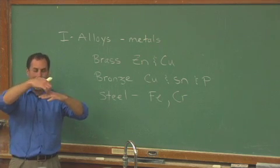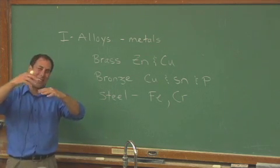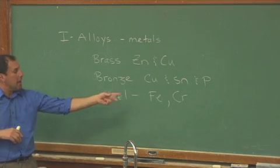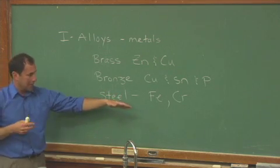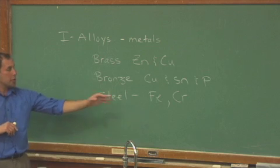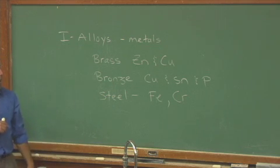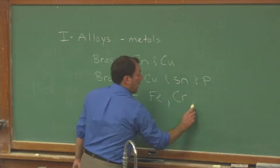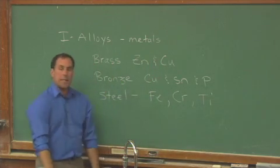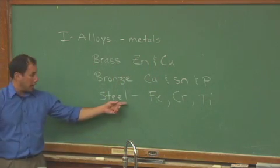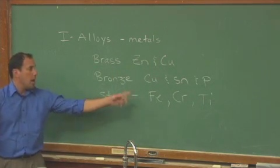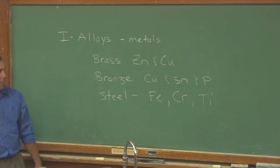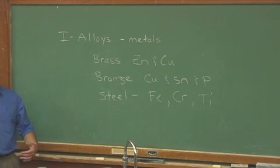Steel is nasty to run your fingernails over — it's always pitted, dirty, maybe even rusty. Chromium helps solve that, so we might call it stainless or surgical steel if we add chromium. You can add other metals too. Some people will say they want titanium in the mix because it's going to make the alloy steel lighter and stronger. People call it a titanium alloy.